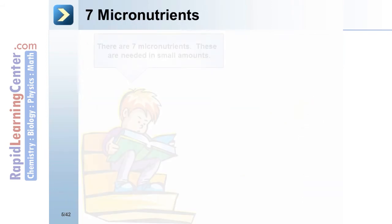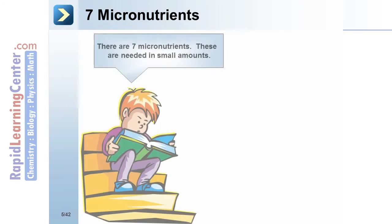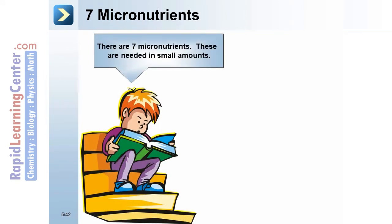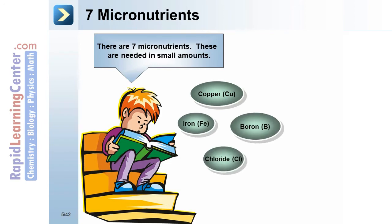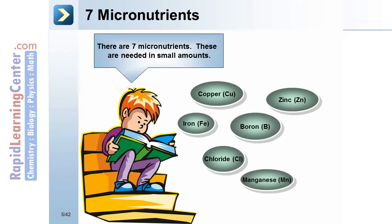There are seven micronutrients. These are needed in small amounts: copper, iron, boron, chloride, zinc, manganese, and molybdenum.